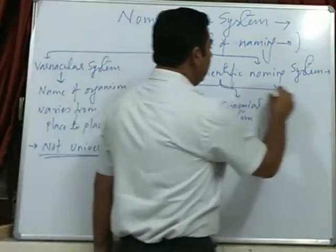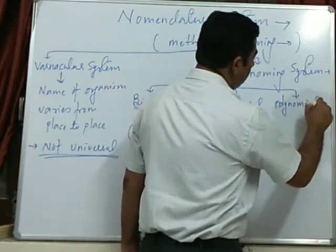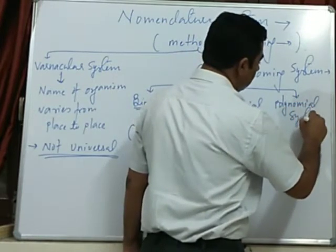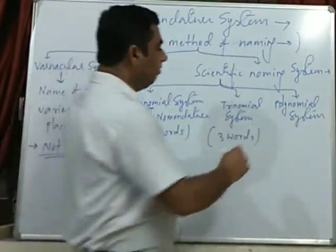Another one is polynomial system of naming, which consists of many words.